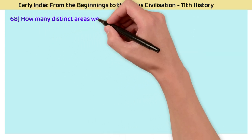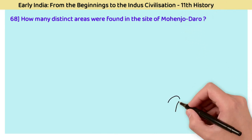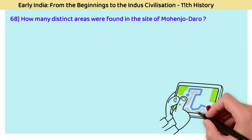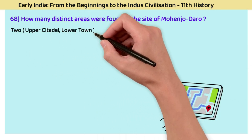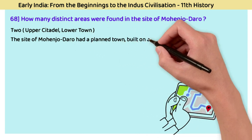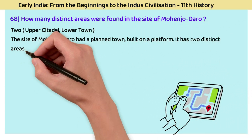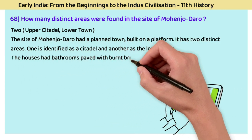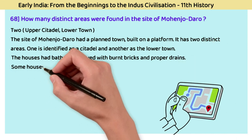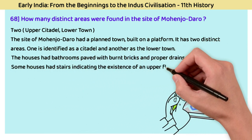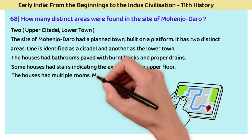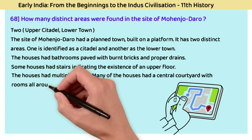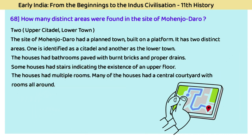Question 68: How many distinct areas were found in the site of Mohenjo-daro? The answer is two — an upper citadel and a lower town. The site of Mohenjo-daro had a well-planned town built on a platform with two distinct areas: a citadel and a lower town. Houses had bathrooms paved with burnt bricks and a proper drainage system. Some houses had stairs indicating an upper floor, multiple rooms, and many had a central courtyard with rooms all around.